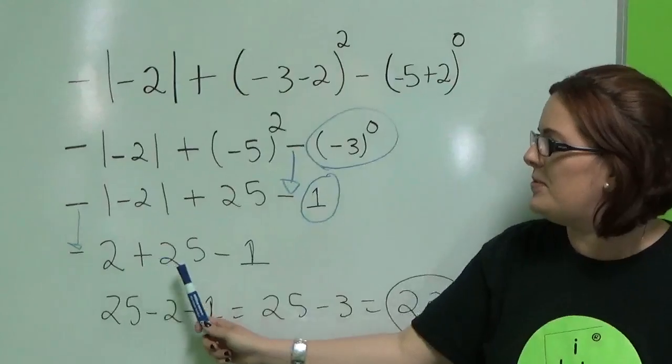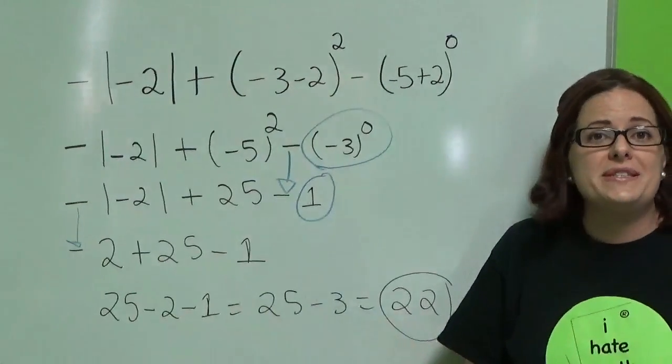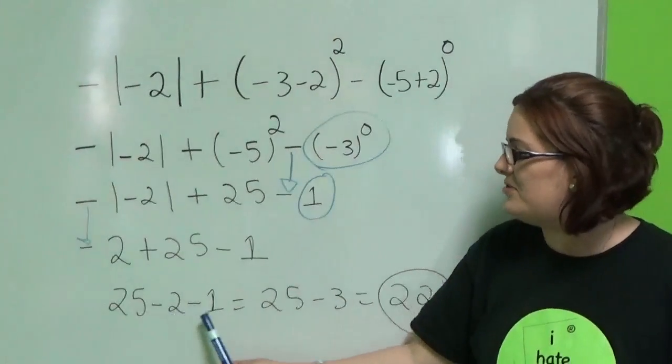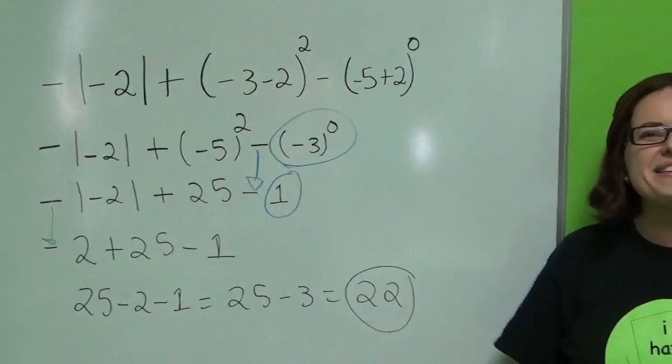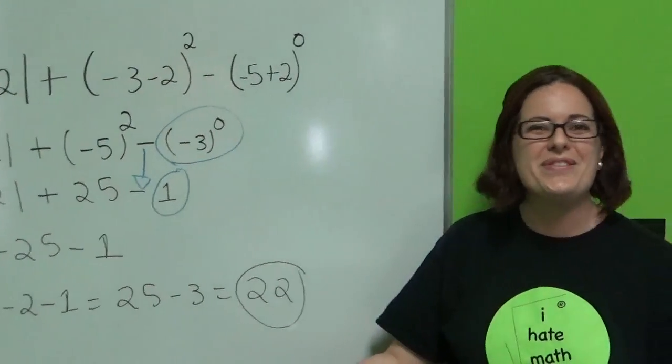Finally, I just do negative 2 plus 25 minus 1, which is the same thing as writing 25 minus 2 minus 1 or 25 minus 3. My final answer is 22. That's how easy it is. Thank you.